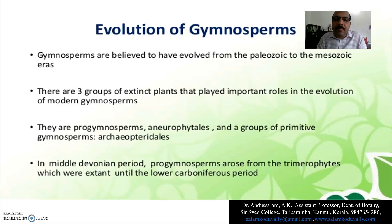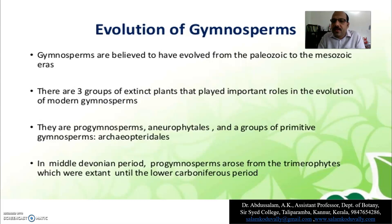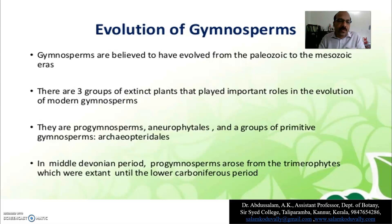Gymnosperms are believed to have evolved from the Paleozoic to the Mesozoic era. There are three groups of extinct plants that played an important role in the evolution of modern gymnosperms.